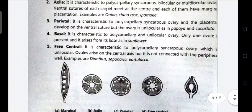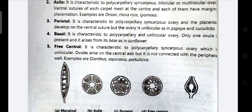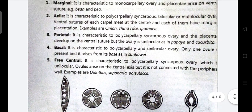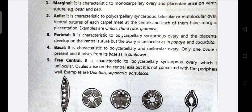Axile placentation is characteristic of polycarpellary syncarpous, bilocular or multilocular ovary. The ventral sutures of each carpel meet at the center and each has marginal placentation. Examples: onion, China rose, Ipomoea. Next is parietal placentation — it is characteristic of polycarpellary syncarpous ovary, and the placenta develops on the ventral suture, but the ovary is unilocular. Examples: papaya and cucumber.